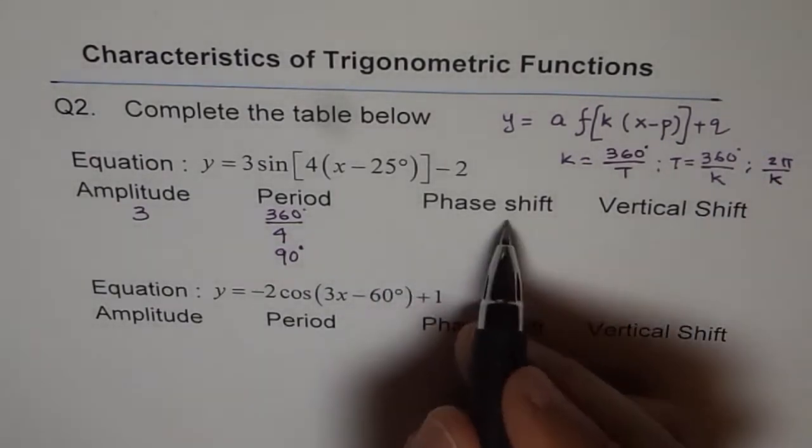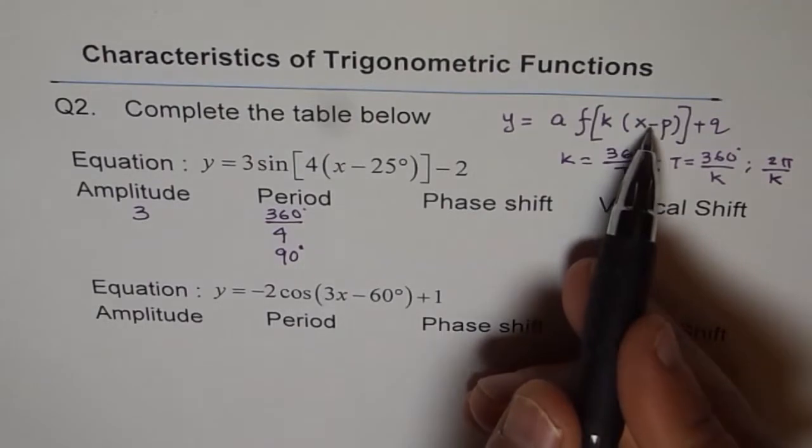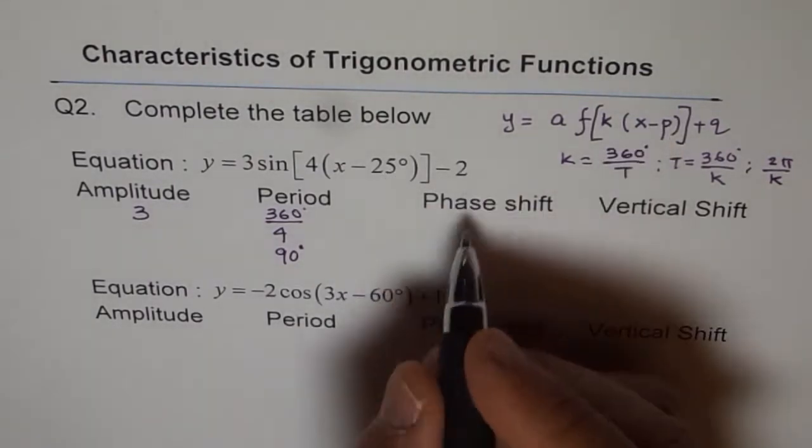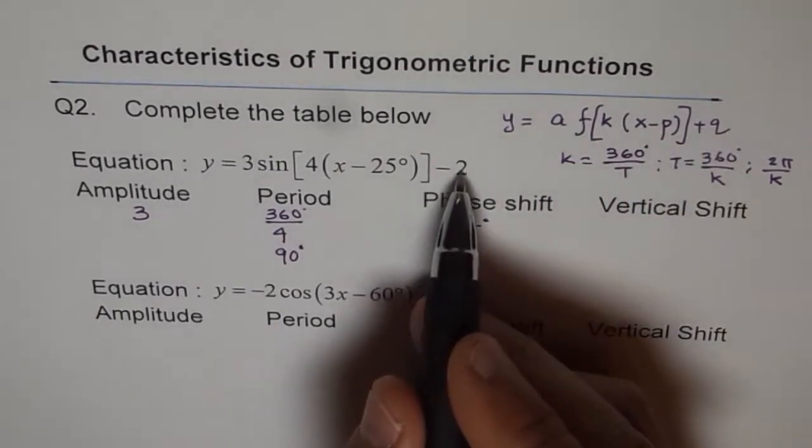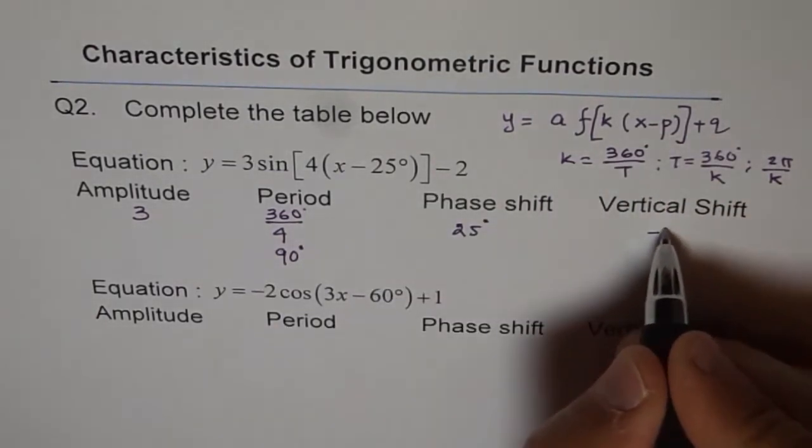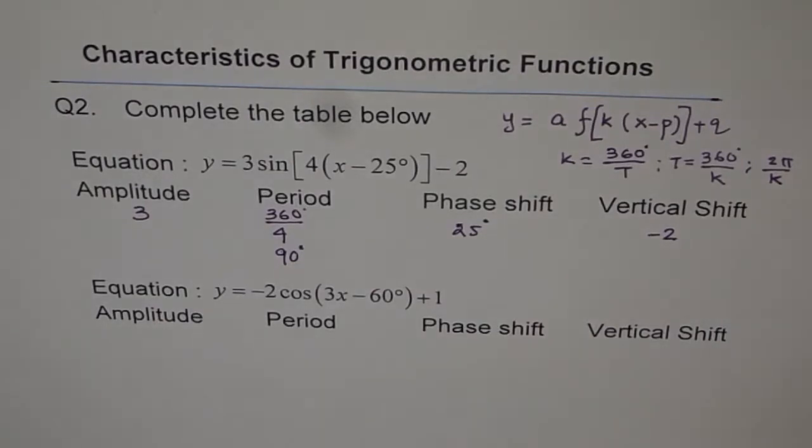Now phase shift is this value. If you compare, this is minus p minus 25. So the phase shift is 25 degrees. And plus q minus 2. Vertical shift is minus 2 units. That is how it is.